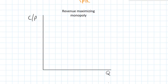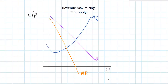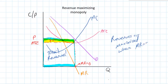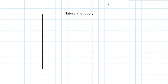Monopolists may not always want to maximize their profits. In some cases, they might want to increase output and produce at a level at which revenues are maximized. Recall that marginal revenue equals zero at the point where total revenue is at its greatest; therefore, the revenue-maximizing level of output is where the marginal revenue curve crosses the zero axis. The yellow area of economic profits is smaller than the profit-maximized monopolist's, but the blue area represents total revenues — this rectangle is largest when marginal revenue equals zero.